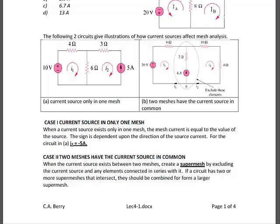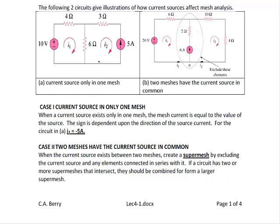We perform KVL and KCL at the super mesh, though it works a little differently. The KVL equation for the super mesh is the sum of the voltages: negative 20 plus 6I1 plus 10I2 plus 4I2 equals zero. The KCL equation for the super mesh gives the relationship between I1 and I2. Since I2 enters the bottom node and I1 and the 6 amp source leave the bottom node, the KCL equation is I2 equals I1 plus 6.